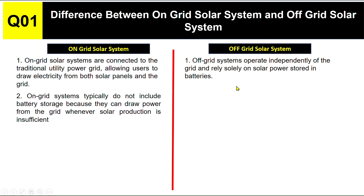On-grid solar systems typically do not include battery storage, because they can draw power from the grid whenever solar production is insufficient. There is no battery storage facility in the on-grid solar system.